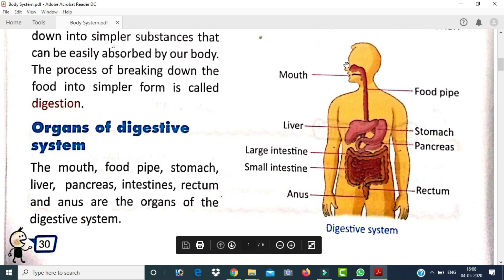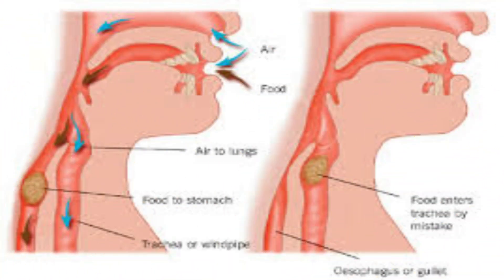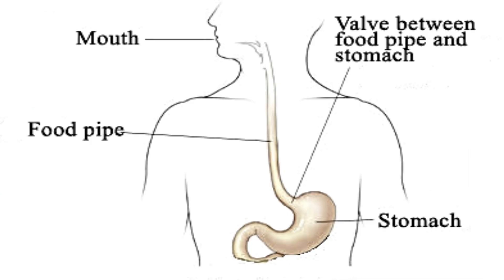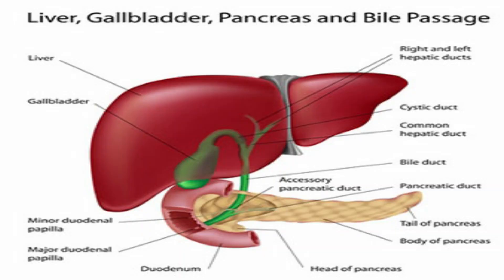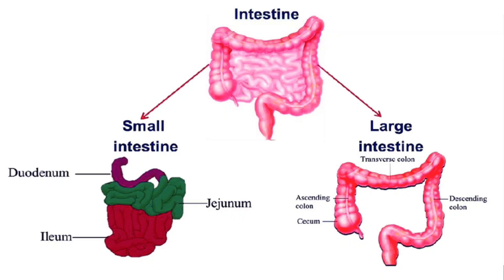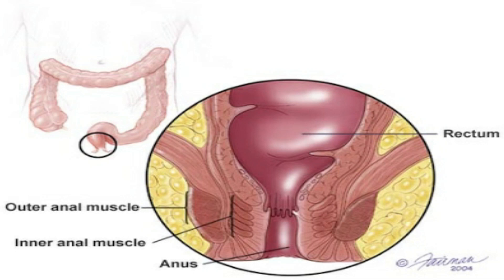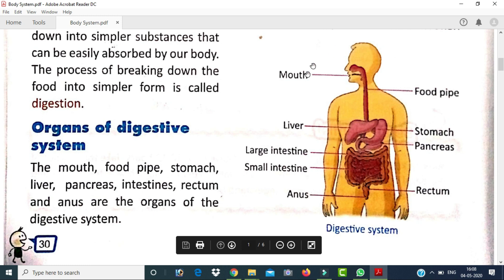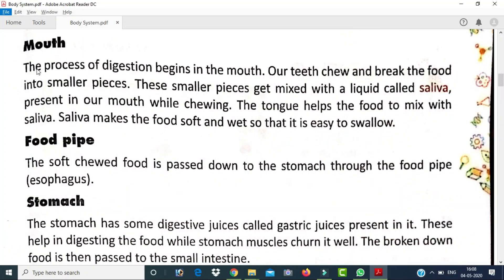We can see in this picture the parts of the digestive system. The first part is the mouth, followed by the food pipe, stomach, liver, pancreas, small intestine, large intestine, rectum, and anus. The whole system is involved in digestion.